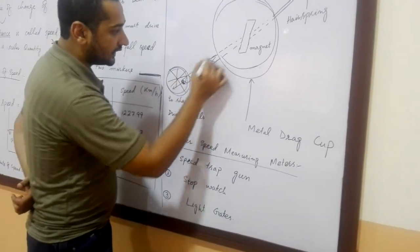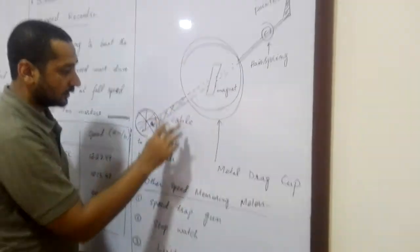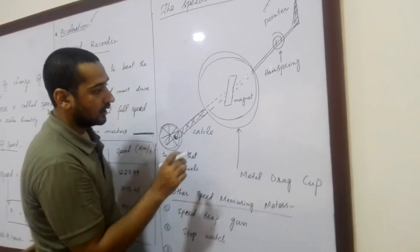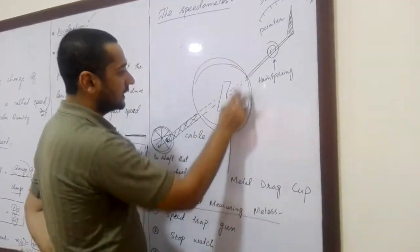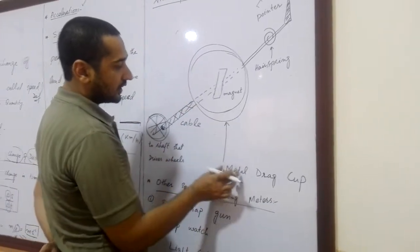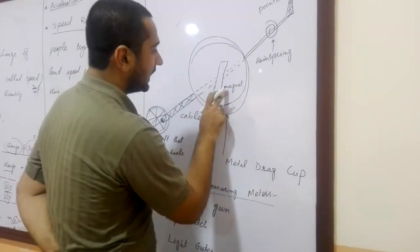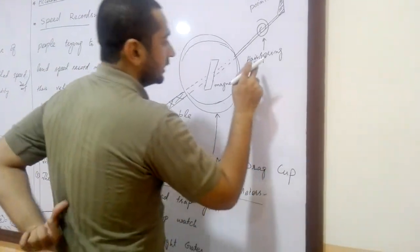And this shaft is connected to the magnet of the meter by the cable. And this one is metal drag cup. Inside of the metal drag cup is magnet, which magnet is connected. So here is the metal drag cup.